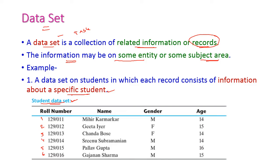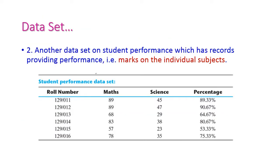The dataset contains information about six different students. The columns of the table are called attributes — attributes of the student. Let us take another example: a student performance dataset, which contains records providing a particular student's performance — marks on individual subjects. For example, a student's roll number, 89 marks from maths, 45 from science, and the corresponding percentage. All six students' mark details are given in the student performance dataset.